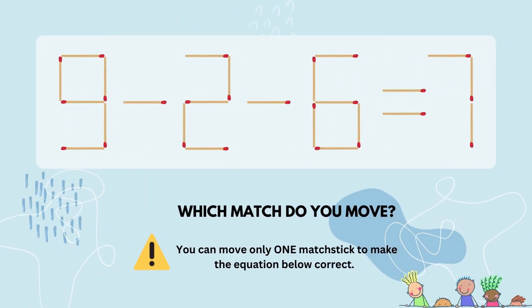The second possibility is to move the left vertical match from the nine to make it a three. We then move that matchstick to the minus sign in front of the six, making it a plus sign. The new equation now reads three minus two plus six. Working from left to right, three minus two is one and one plus six equals seven. Perfect. Did you get at least one of the possibilities?